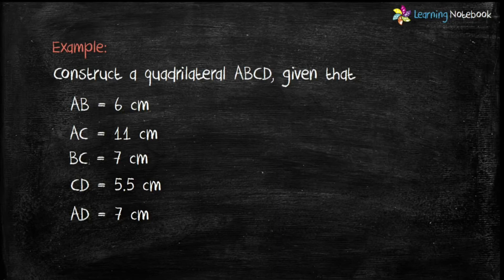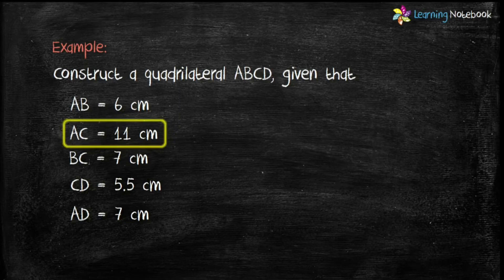So, AB, BC, CD and DA are the sides of the quadrilateral, while AC and BD are the diagonals of the quadrilateral. So, here in this question, we are given 4 sides and AC as the diagonal.